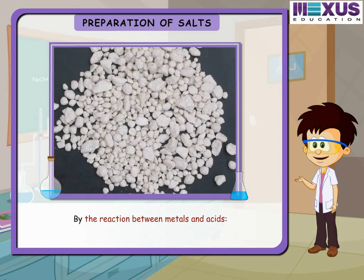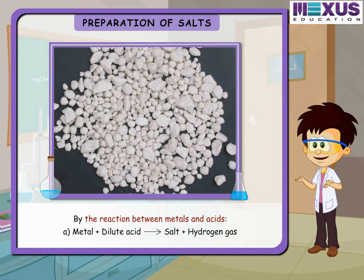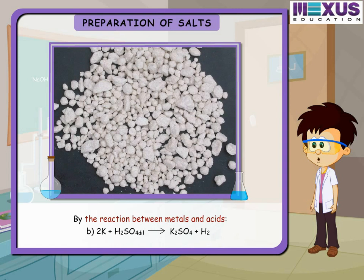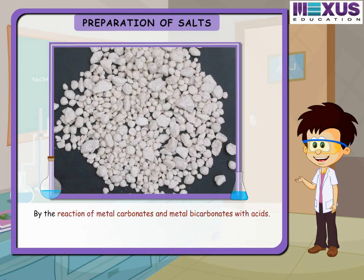By the reaction between metals and acids: a metal reacted with a dilute acid gives the corresponding salt and hydrogen gas. For example, potassium reacting with sulfuric acid gives potassium sulfate and hydrogen gas.